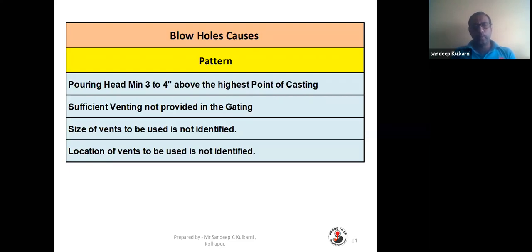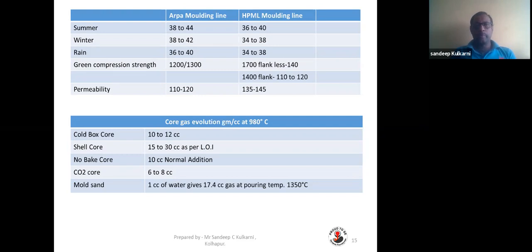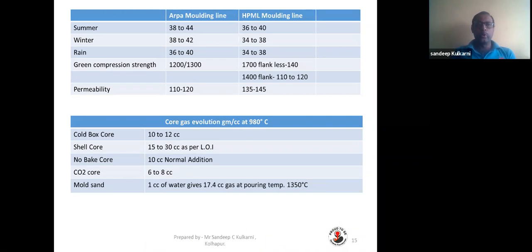This is a seasonal comparison of compactability to help control sand and avoid blowholes: in summer, 38 to 44; in winter, 38 to 42; and in rainy season, 36 to 40. In rainy season, higher compactability means more moisture, increasing blowhole chances, so you must reduce compactability. In winter, you can increase it slightly based on ambient temperature, but in rainy season you must control compactability tightly to control moisture.